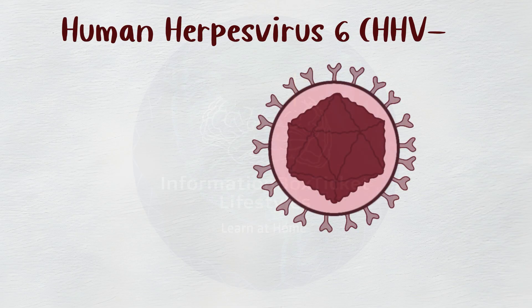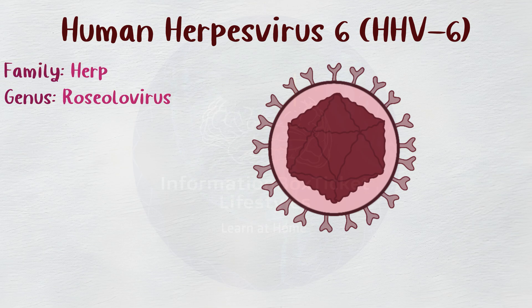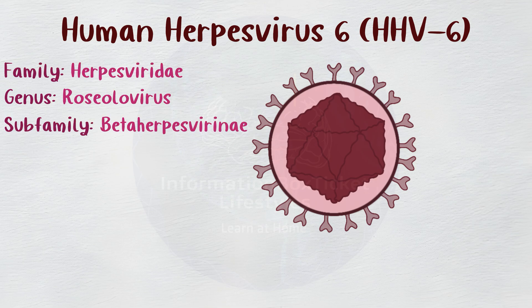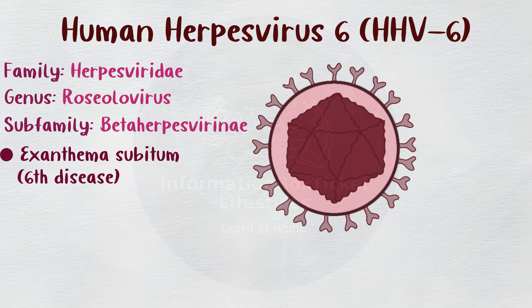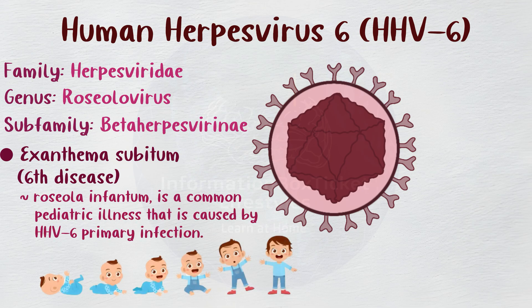Human herpesvirus 6, or HHV-6, is a double-stranded DNA virus and a member of the genus Roseola virus of the Herpesviridae family, subfamily Beta-herpesvirinae. Exanthema subitum, also referred to as sixth disease or Roseola infantum, is a common pediatric illness caused by HHV-6 primary infection.